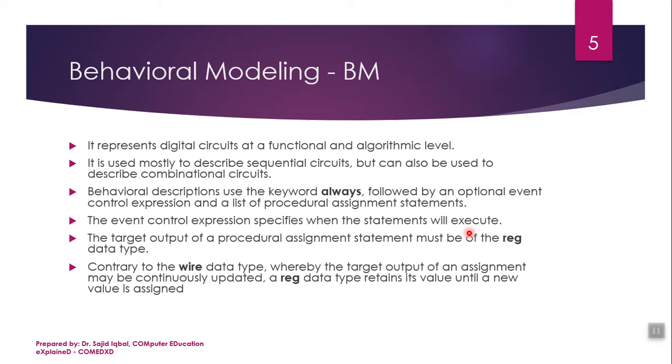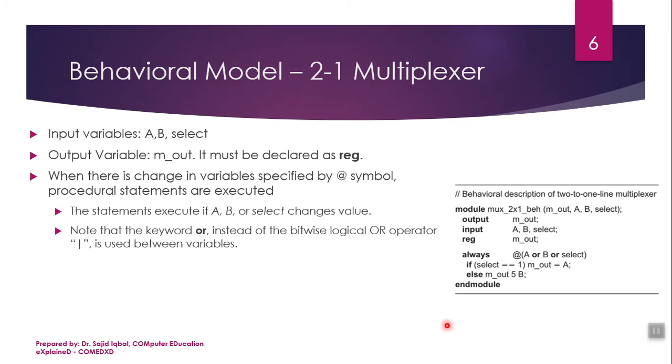The target output of a procedural assignment statement must be of the registered data type. Contrary to the wire data type, whereby the target output of an assignment may be continuously updated, a registered data type retains its value until a new value is assigned. That means the wire values are changing. That is the difference.